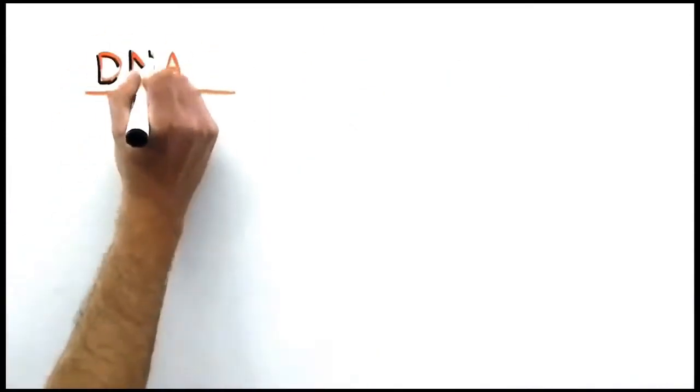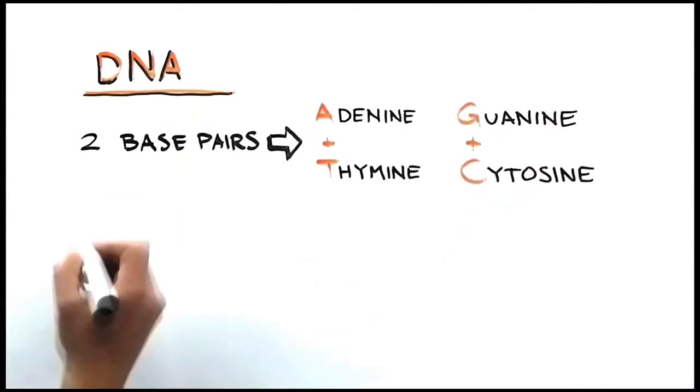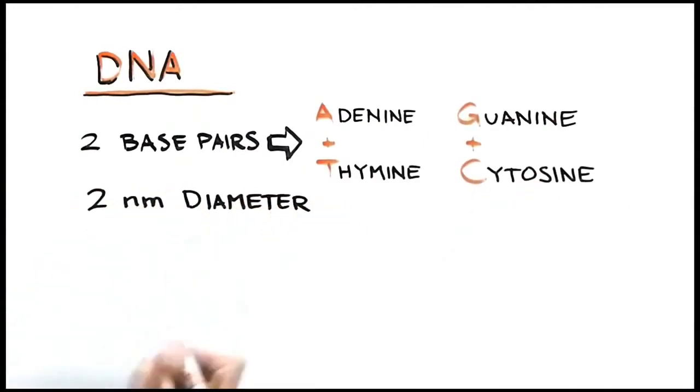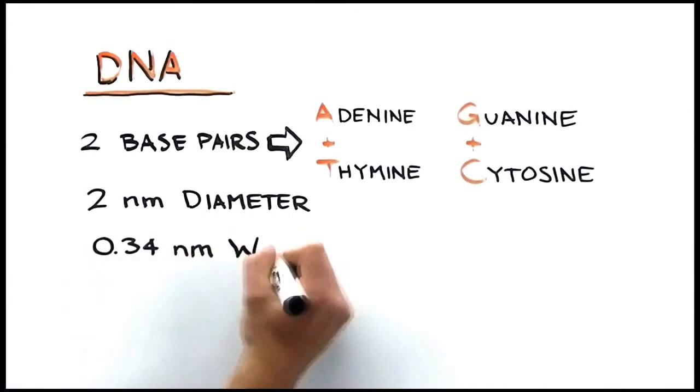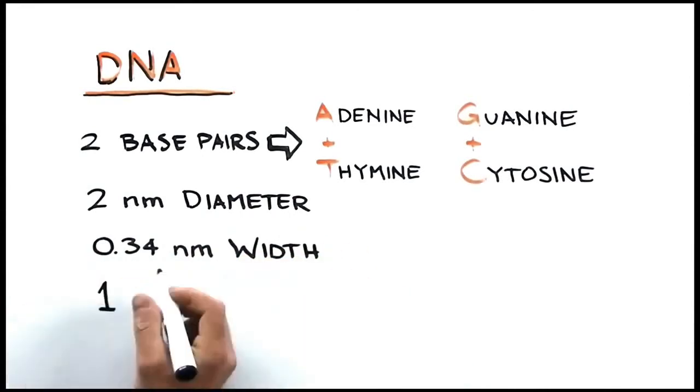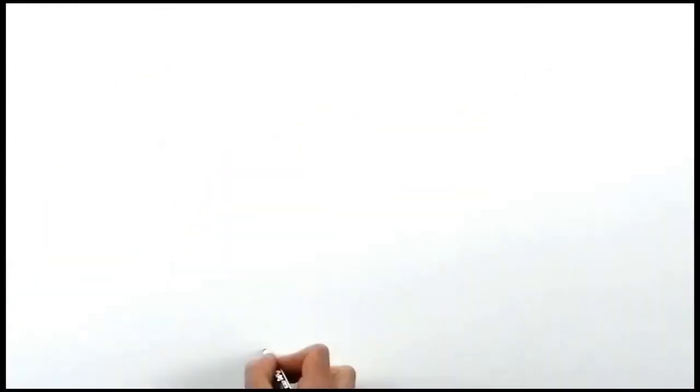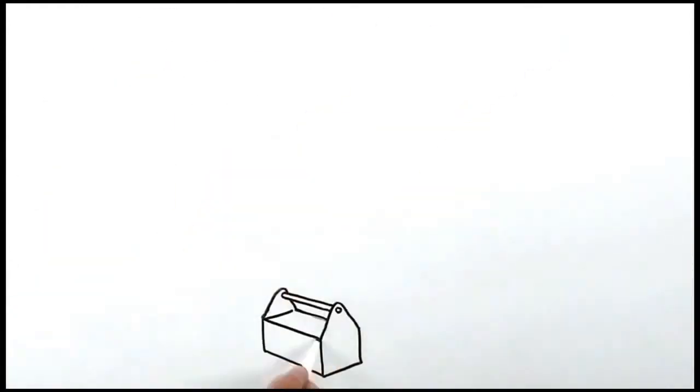The nice thing about DNA is that it's simple and relatively easy to work with. There are only two standard base pairs. DNA has roughly a two nanometer diameter, and each base is about a third of a nanometer wide. And the double helix has a pretty simple and regular helical geometry.